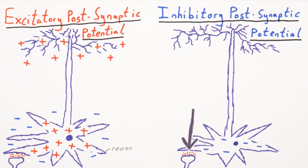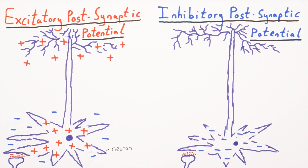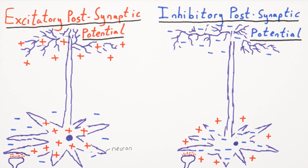In an inhibitory post-synaptic potential, the neurotransmitter binding causes negative ions to flow into the neuron, making the inside of the neuron more negative, making the extracellular space relatively more positive, and making the distant extracellular space more negative. So excitatory and inhibitory post-synaptic potentials create differences in charge — dipoles — at the opposite ends of the neurons.